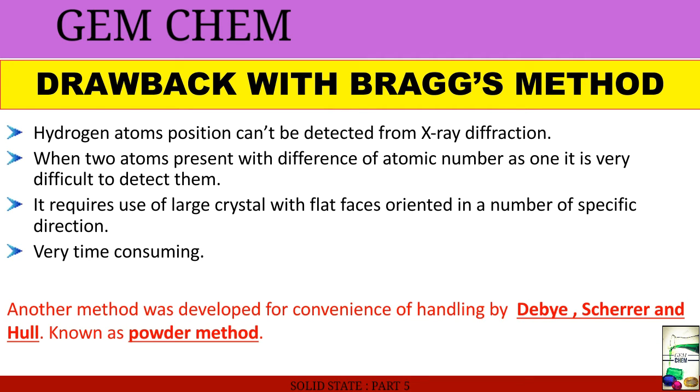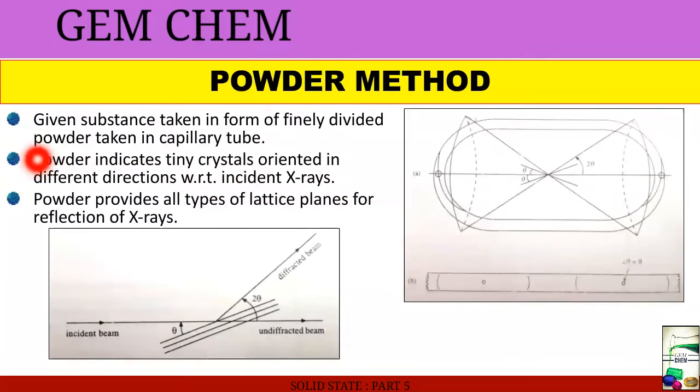Another method was developed for the convenience of handling by Debye, Scherer and Hull, and this method is known as powder method. Given substance is taken in the form of finely divided powder in a capillary tube. The powder indicates that tiny crystals are being oriented in different directions with respect to incident X-rays. Since tiny crystals, they don't require to be oriented in different orientations as they're in enormous amount and directed towards the different directions. Powder provides all types of lattice planes for the reflection of X-rays.